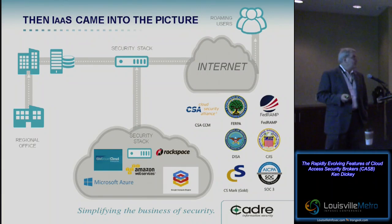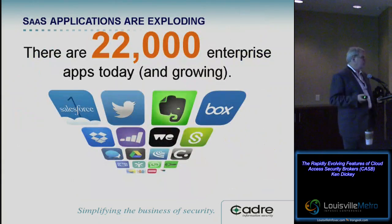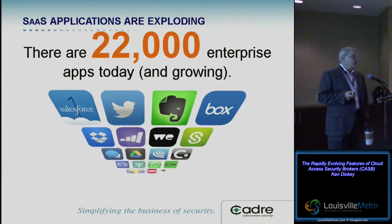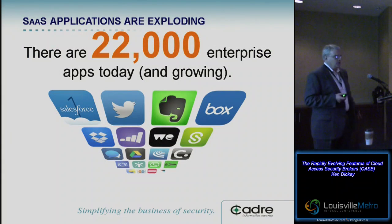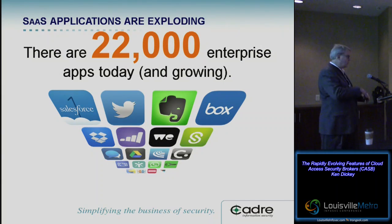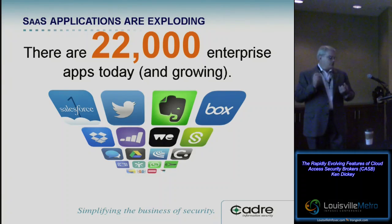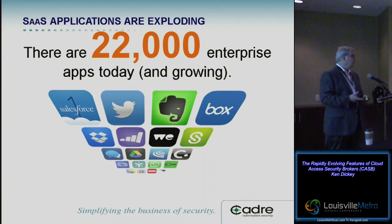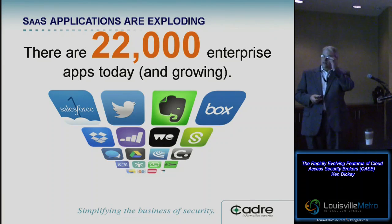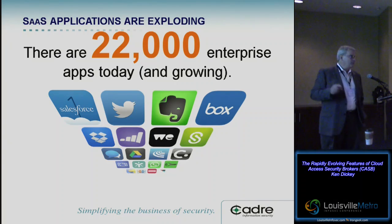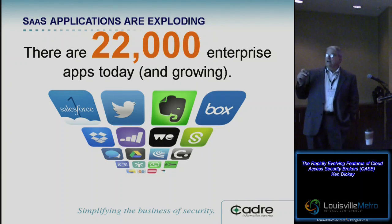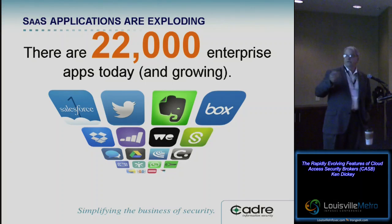The need for CASB came about as SaaS applications — software as a service — came to play. You're no longer running these applications in an infrastructure that you control. These are applications somebody else maintains; they're in charge of version control and everything you're traditionally in charge of. This number keeps growing. Even from the first time I presented, it was at 15,000. The latest cloud report came out from Netskope, who we partnered with, and we're up to 22,000 different apps.